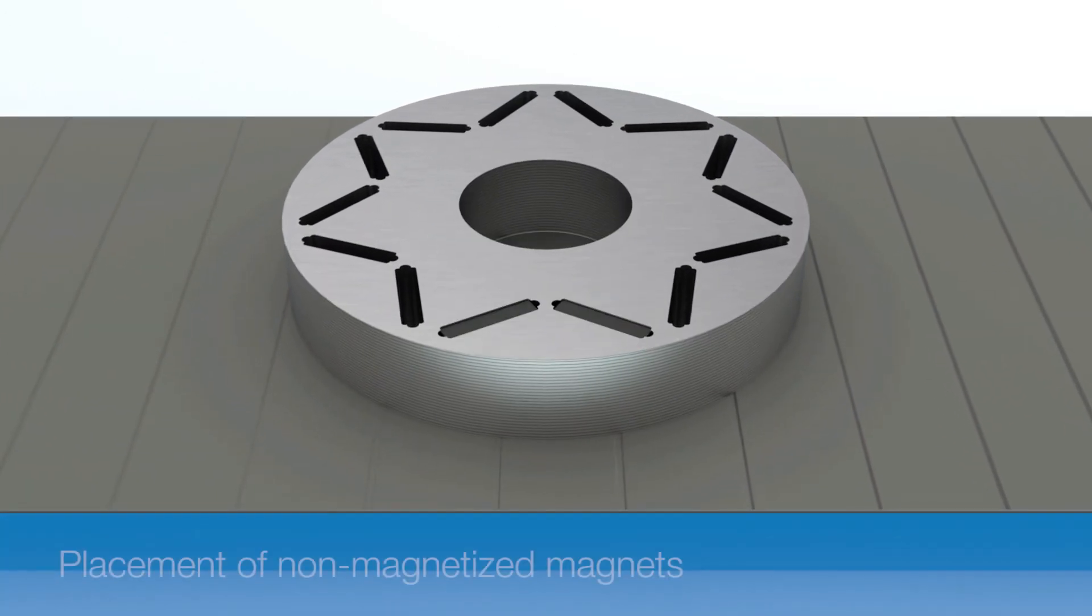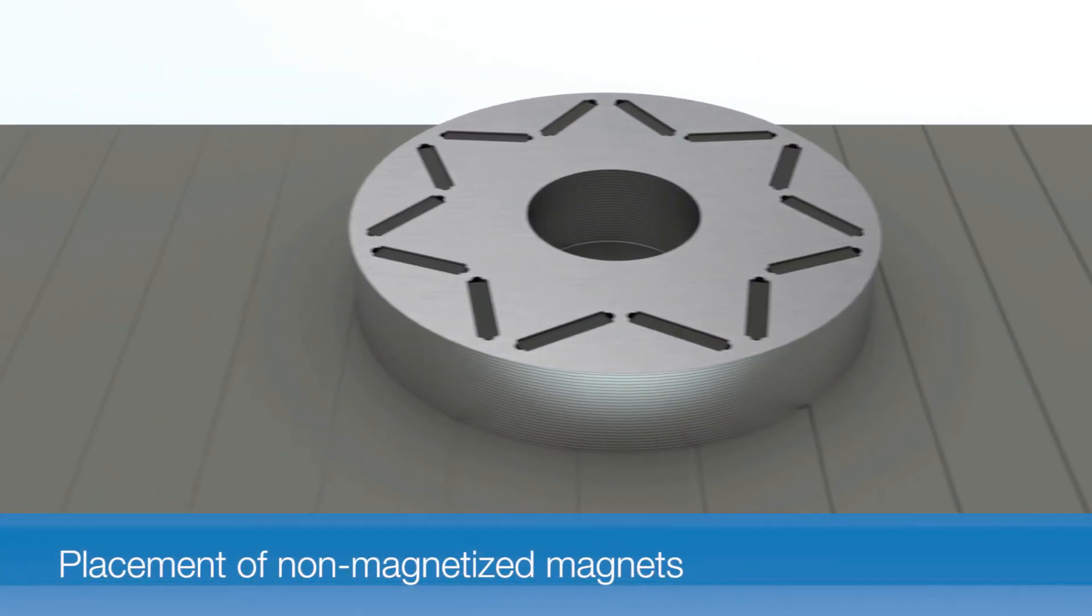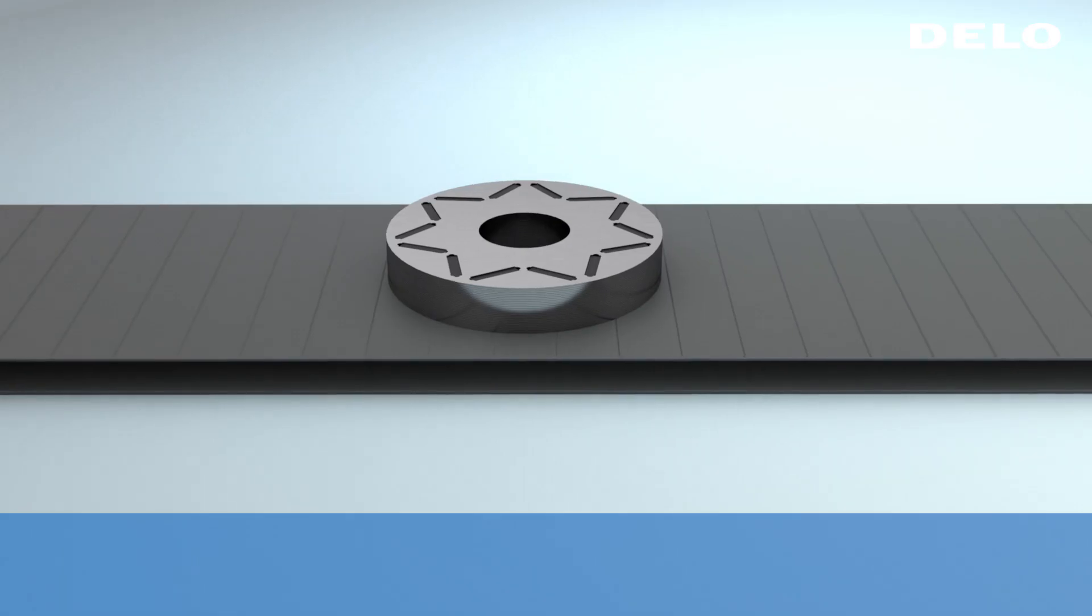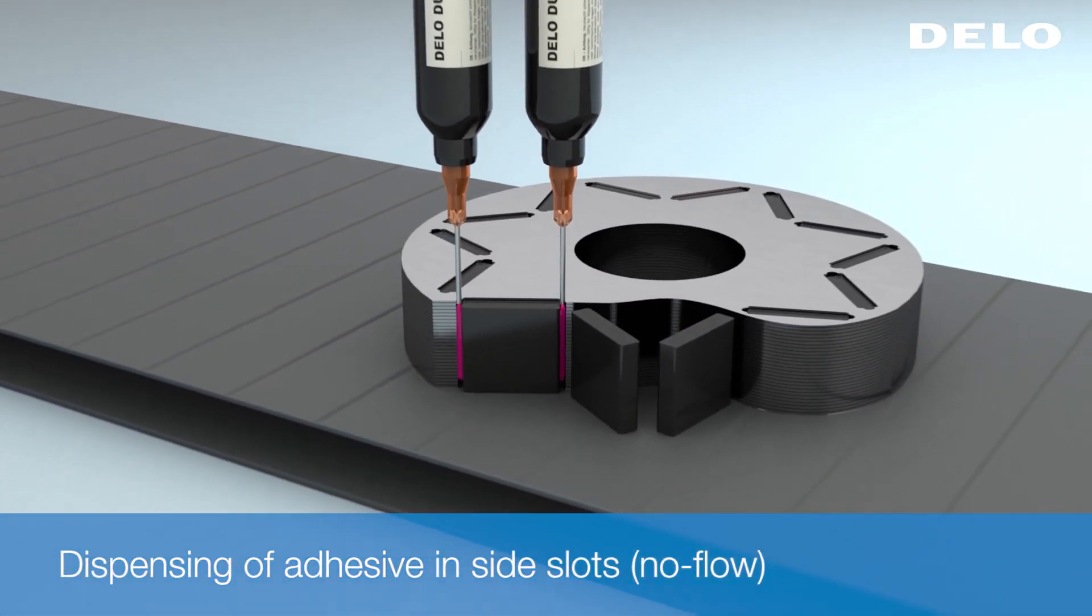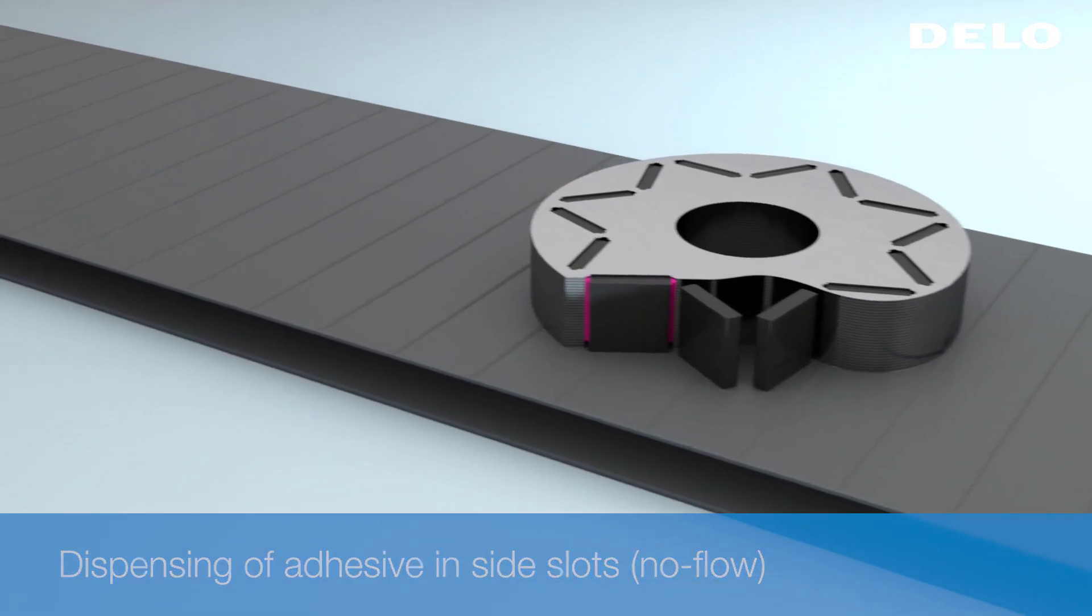The non-magnetized magnets are placed into the rotor. In the next process step, adhesive is dispensed in the side slots. Due to its viscous properties, the adhesive remains in the slot without dripping.